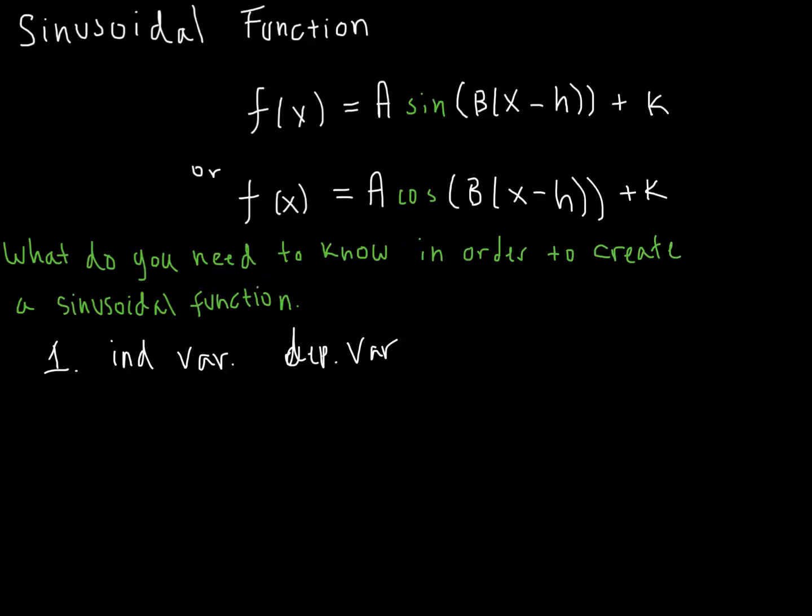Then, only after I've done that, should I find the parameters, right? And the parameters are the A, B, H, and K values, okay? So, step two will be to find the parameters, and those of course are A, B, H, and K, right? And we know what those represent. Amplitude, B is incorporated in the period, H is the phase shift, and K is the midline. And we still will need to decide, is this going to be sine or cosine?